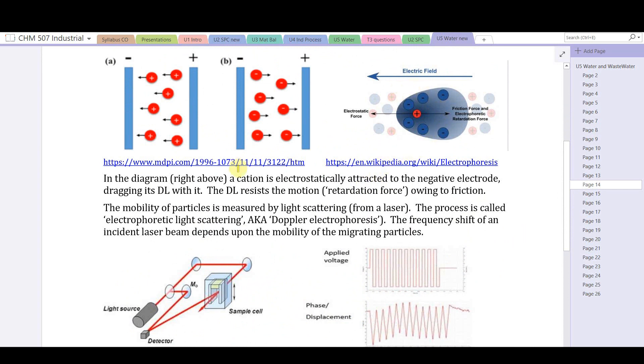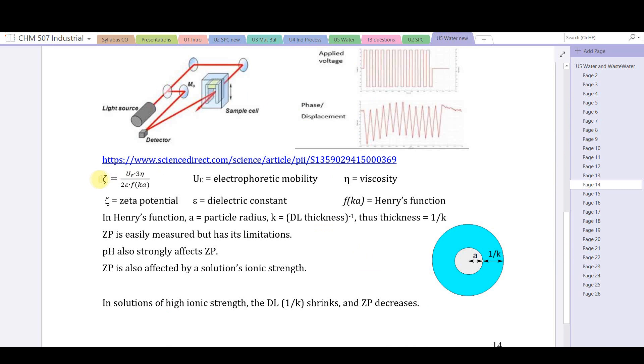In this diagram on the right, a cation is electrostatically attracted to a negative electrode, dragging its double layer with it. If this was clay, we'd see the negative surface charge dragging a positive layer with it. The double layer resists the motion - it's a retardation force owing to friction. This is a measure of the mobility of particles. The mobility is measured by light scattering from a laser. The process is called electrophoretic light scattering or sometimes Doppler electrophoresis. There's a frequency shift of an incident laser beam that depends upon the mobility of the migrating particles. We don't need to understand how the light scattering works - we're more interested in the magnitude of the zeta potential and what it means. Here's the formula for zeta potential.